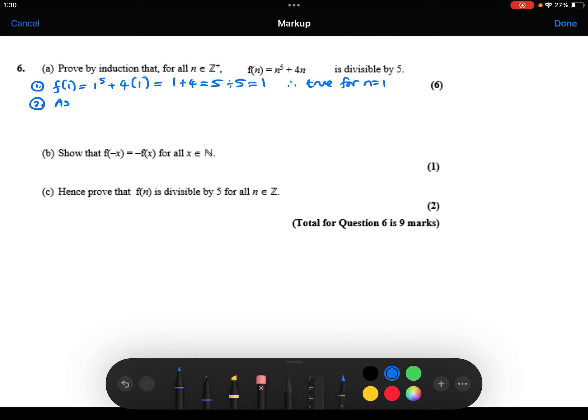Step 2, we're going to assume that k to the power 5 plus 4 times k is divisible by 5. And we're now going to try and use that fact to show that k plus 1 to the power 5 plus 4 times k plus 1 is also divisible by 5.